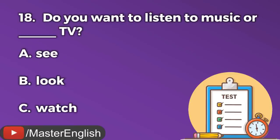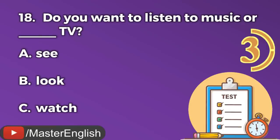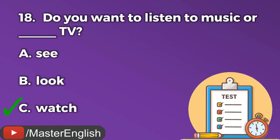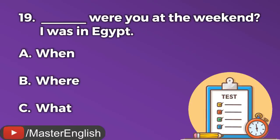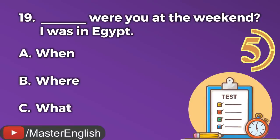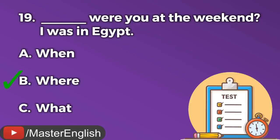Question number seventeen. The ___ is quite expensive, but the food there is excellent. A: Film. B: Restaurant. C: Book. The correct answer is B: Restaurant. Question number eighteen. Do you want to listen to music or ___ TV? A: See. B: Look. C: Watch. The correct answer is C: Watch. Do you want to listen to music or watch TV? Question number nineteen. ___ were you at the weekend? I was in Egypt. A: When. B: Where. C: What. The correct answer is B: Where. Where were you at the weekend? I was in Egypt.